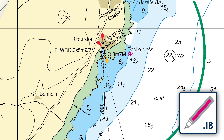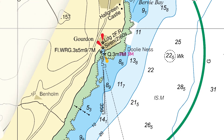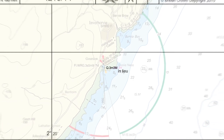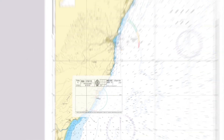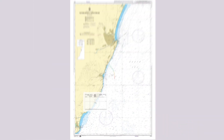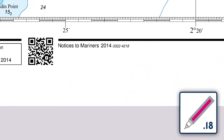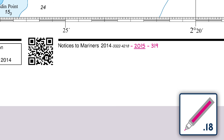Write clearly and distinguish between upper and lower case. Lay the tracing back over the chart and check that the correct range was amended. Once all the updates have been applied, add the NM update number to the chart's notices to mariners section in the bottom left corner of the chart.